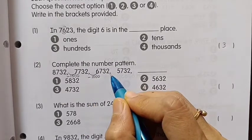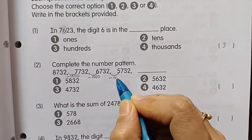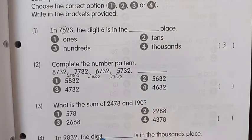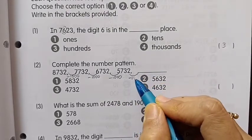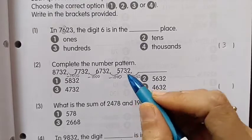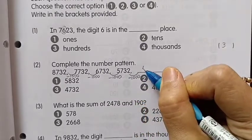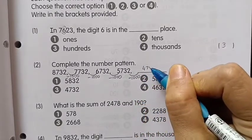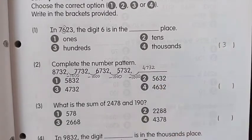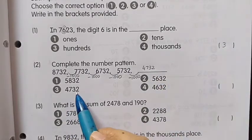The numbers are in decreasing order. So 5732 minus 1000, the answer is 4732.